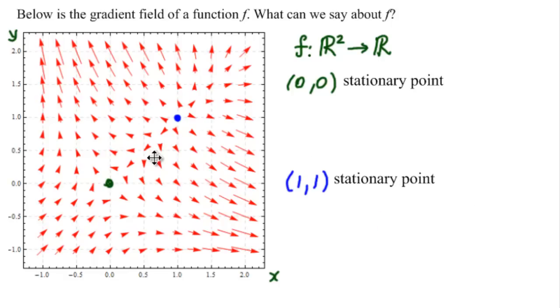But there are different kinds of stationary points. This one is easier to look at. All of the arrows are pointing away from the point. So most probably, this point is a point of minimum.